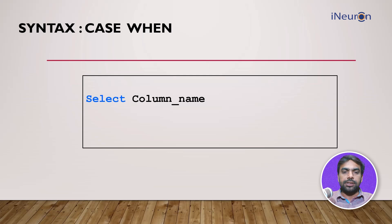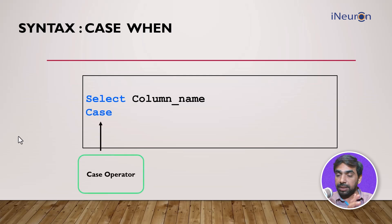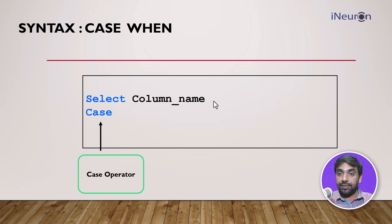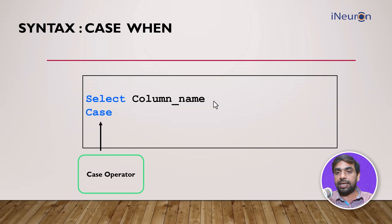Let's start with the syntax. You begin with SELECT and the column names you want to retrieve, then move on to the CASE operator. Please make a special note: I haven't ended the syntax with FROM table name yet, because I haven't defined the new column. So the SELECT statement begins with the columns you want — say first name, last name, email — followed by the CASE operator.